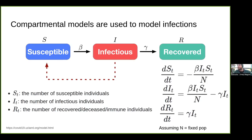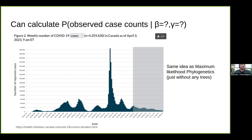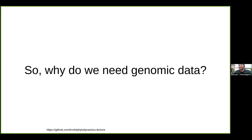How do we actually infer beta and gamma? We can use likelihood approaches from the case data. Much like maximum likelihood inference of phylogenies, we calculate the probability of our observed case counts given specific values of beta and gamma, then take the values that maximize this likelihood — the maximum likelihood estimate. So that's infectious disease modeling purely from case information. Why do we need genomic data?